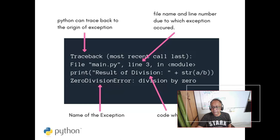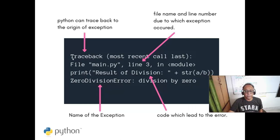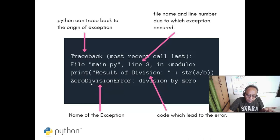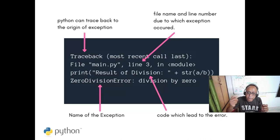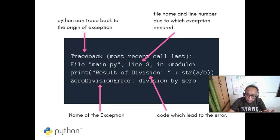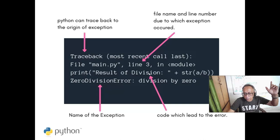Whenever you get a Python traceback, you see which program, which line it comes from — like a zero division error when you try to divide by zero. Python names this error; C doesn't — C just exits. There are various types of exceptions: array out of bounds, if you have a list with four elements and try to access the fifth, it will give an exception. The exception name, which module, which line number — all of that is shown.